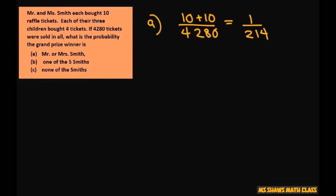Let's put that in the calculator. All right. B, one of the five Smiths. So basically, it would be 10 plus 10 plus 4 plus 4 plus 4, the three tickets for each. So divide it by your total, which is 4,280.